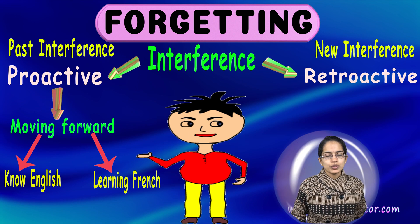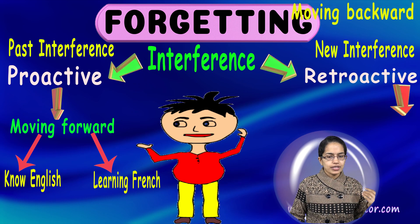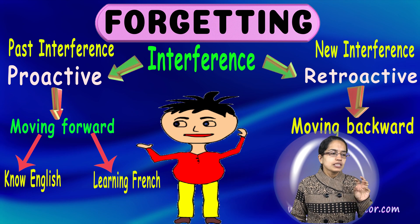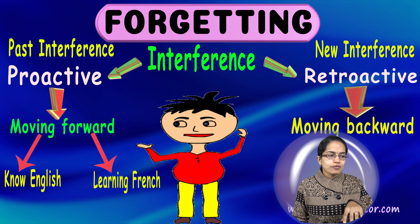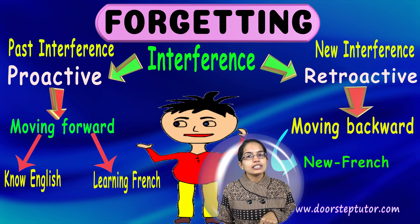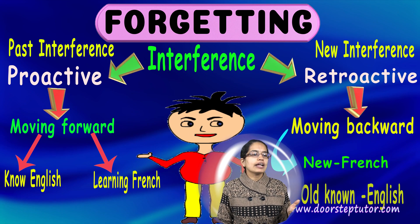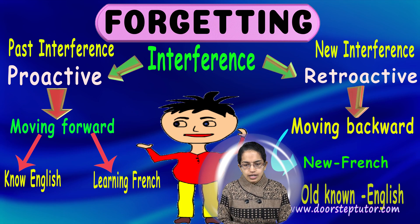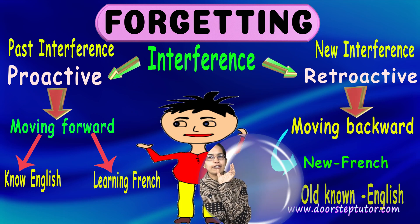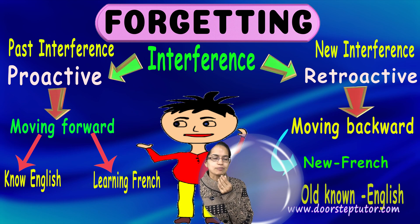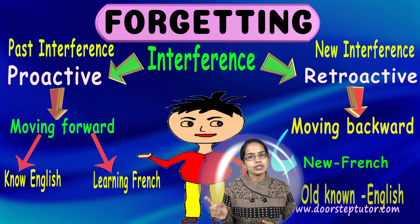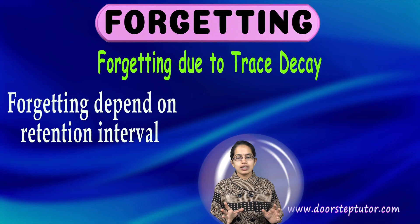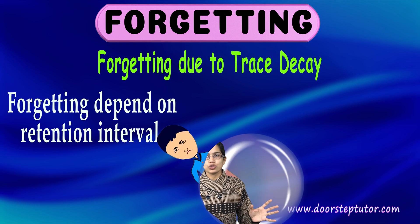On the other hand, there is retroactive interference, which is a backward-moving interference where new learning interferes with past learning. This means that if I am now learning French, whatever I had learned for English is pushed out of mind because the new French learning is interfering with my previously learned English — that is retroactive interference.